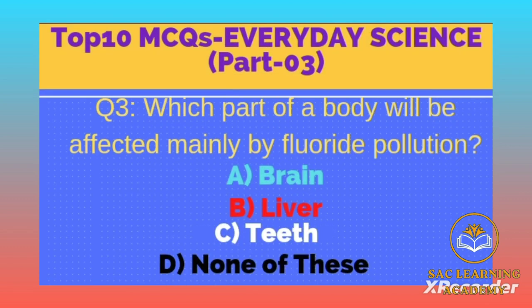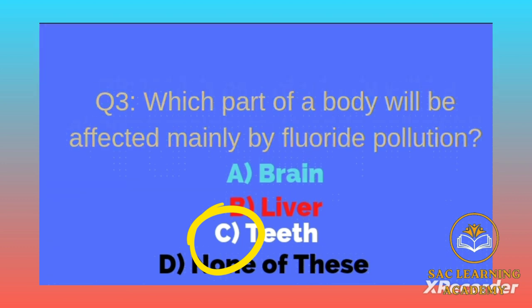Question number 3: Which part of the body will be affected mainly by fluoride pollution? Option A: brain, B: liver, D: none of these. Correct option is D, none of these.